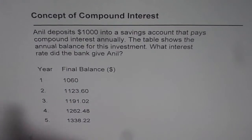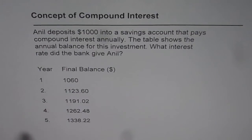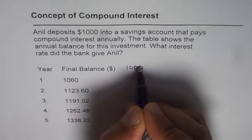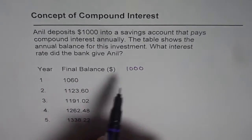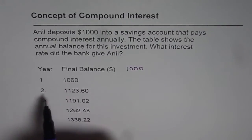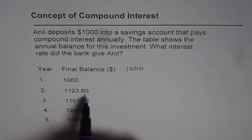We have a table here showing years 1 to 5 and the balance at the end of every year. We started with $1,000 — that is the beginning. At the end of the year, the $1,000 grows to $1,060. At the end of two years, this amount is worth $1,123.60.